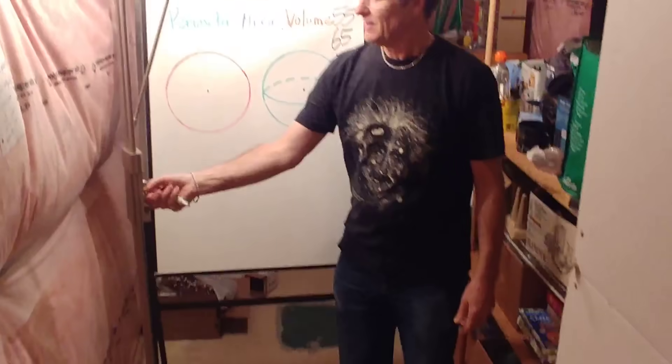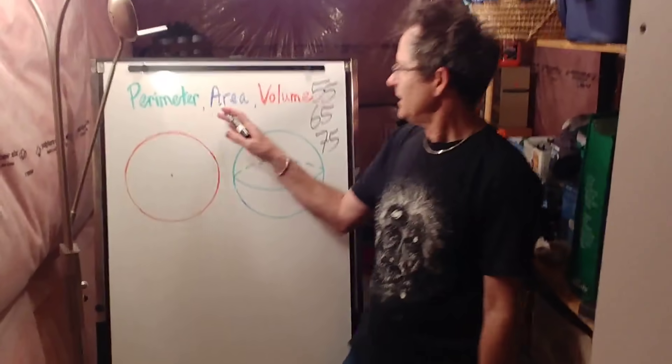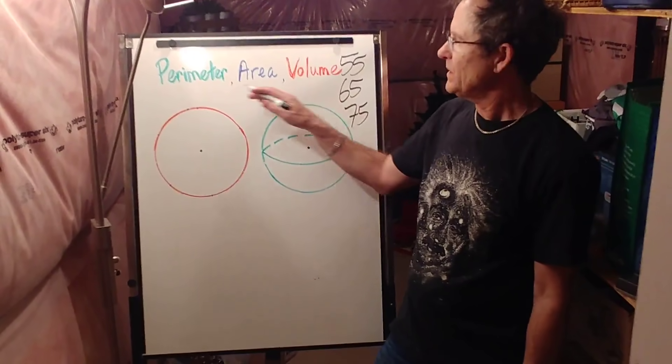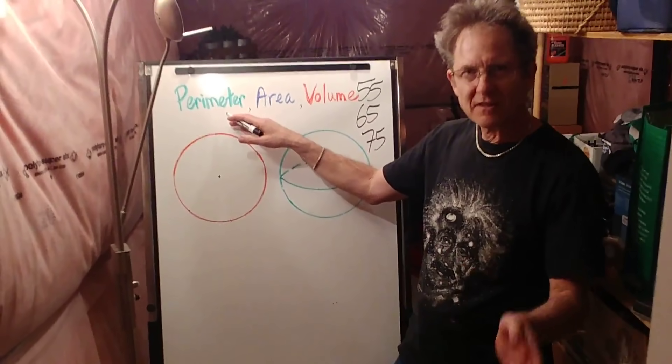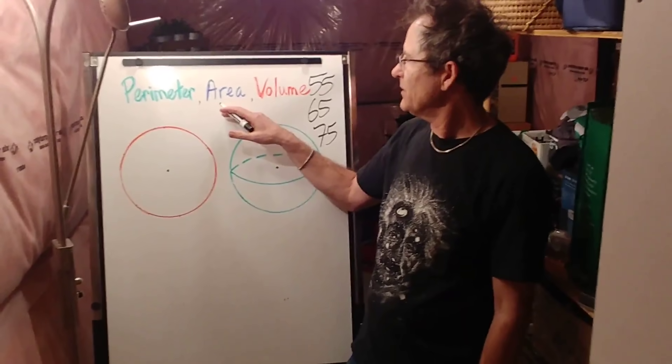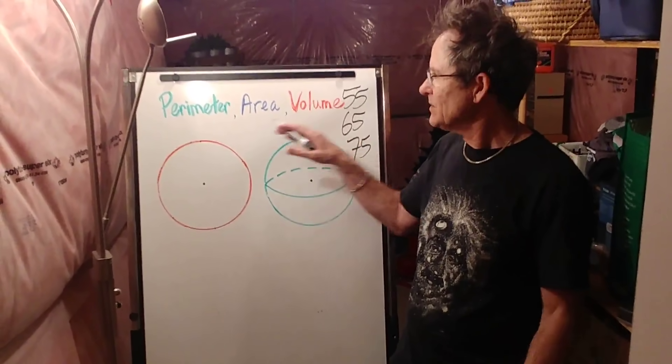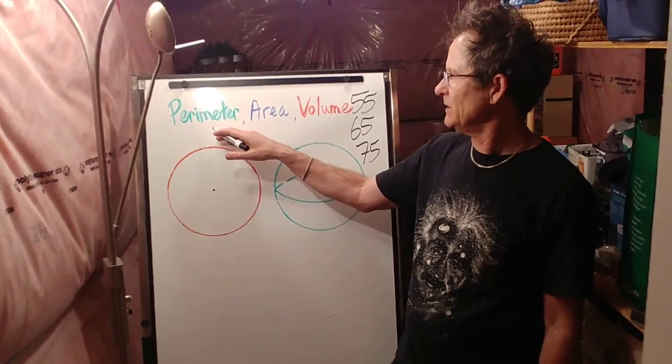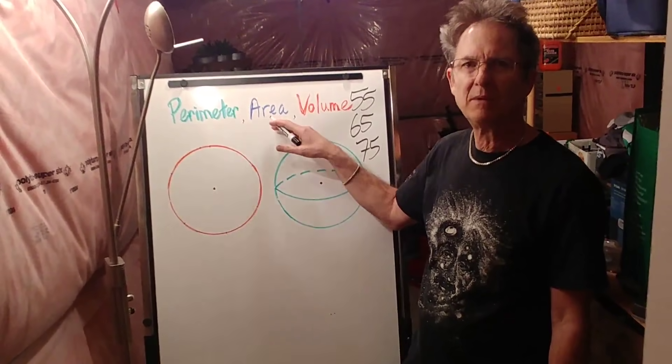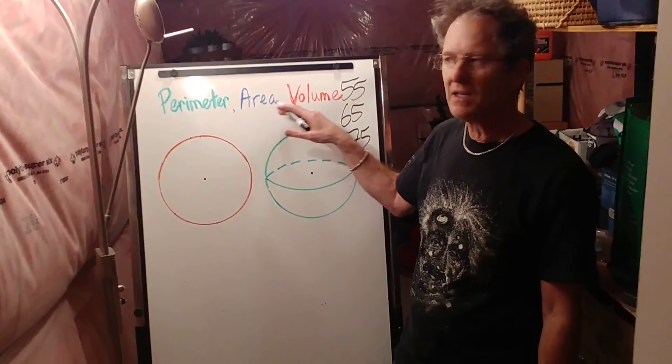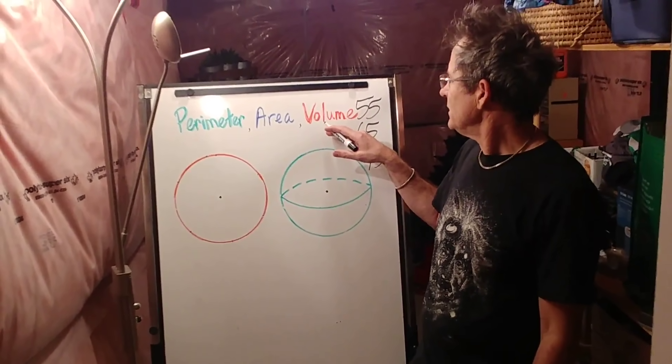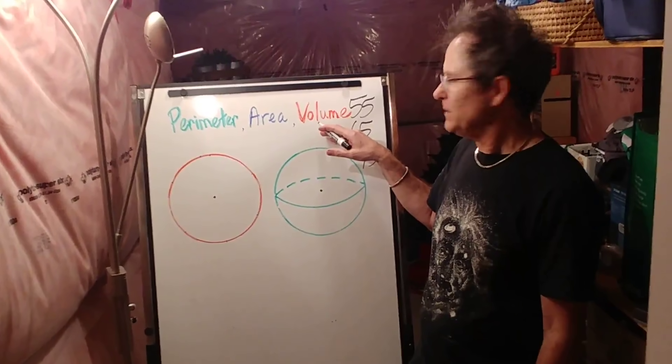Now back to the lesson. I want to talk about perimeter, area, and volume. When you think of perimeter, think about putting a fence around it. When you think of area, think of painting it. When you think of volume, think of filling it. So perimeter is measured in linear units like meters, area is measured in square units like meters squared, and volume is measured in cubic units like meters cubed.